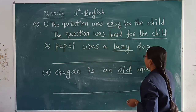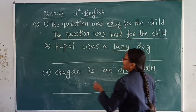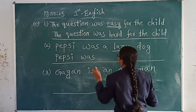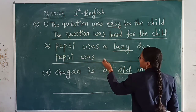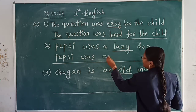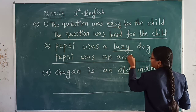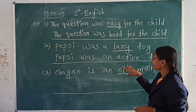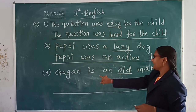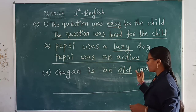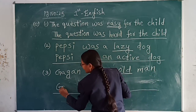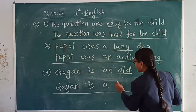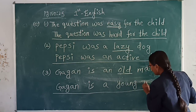The question was hard for the child. Pepsi was a lazy dog — lazy opposite is active, so Pepsi was an active dog. Lazy opposite is active. Gagan is an old man — old opposite is young, so Gagan is a young man.